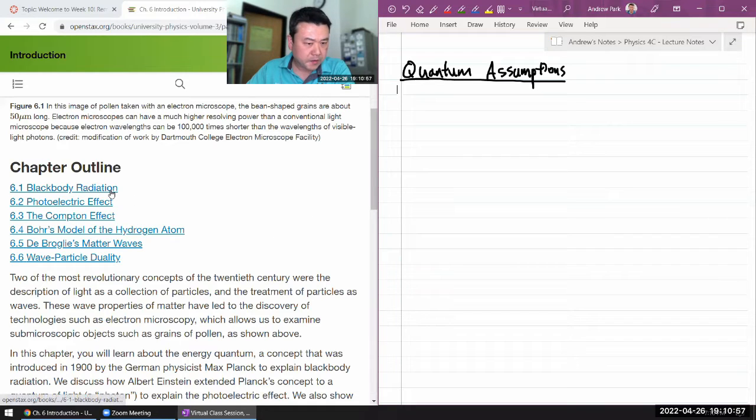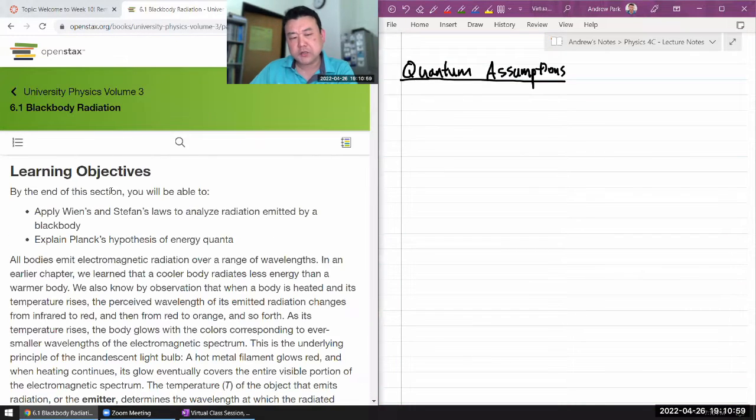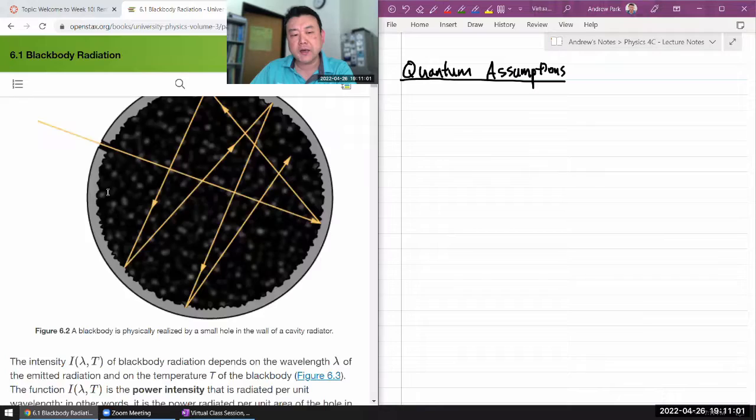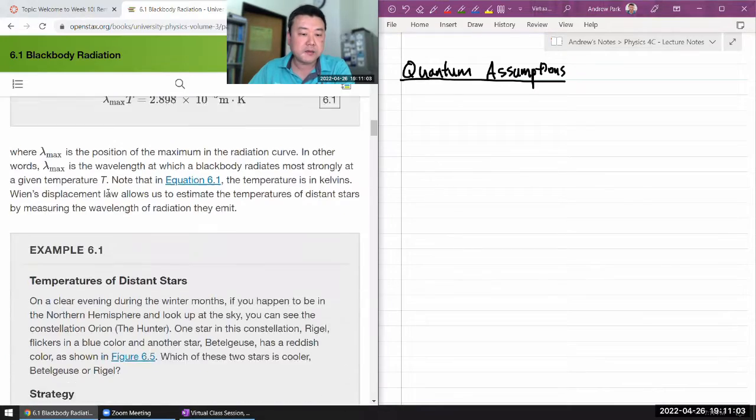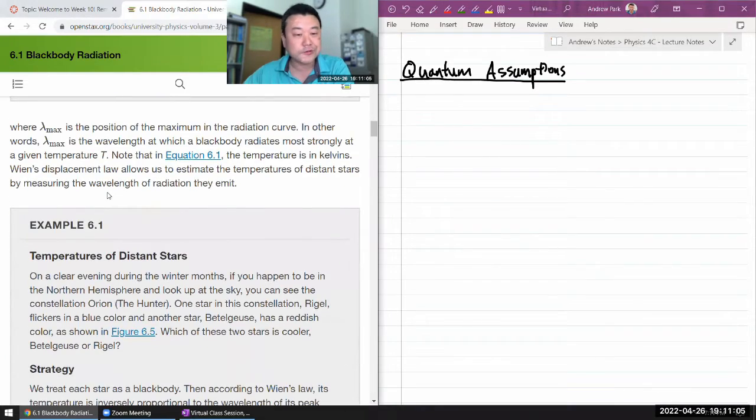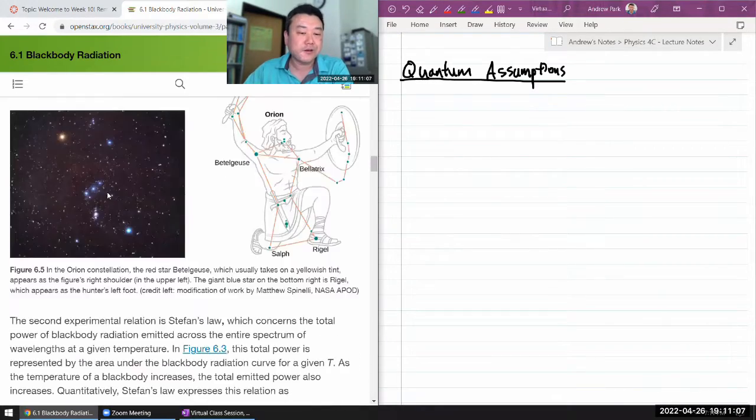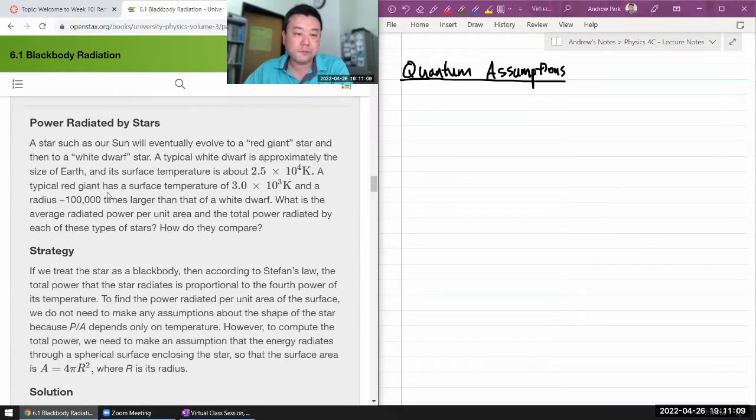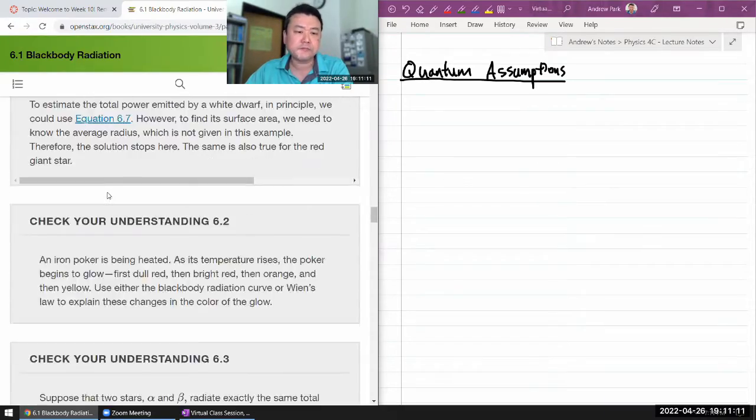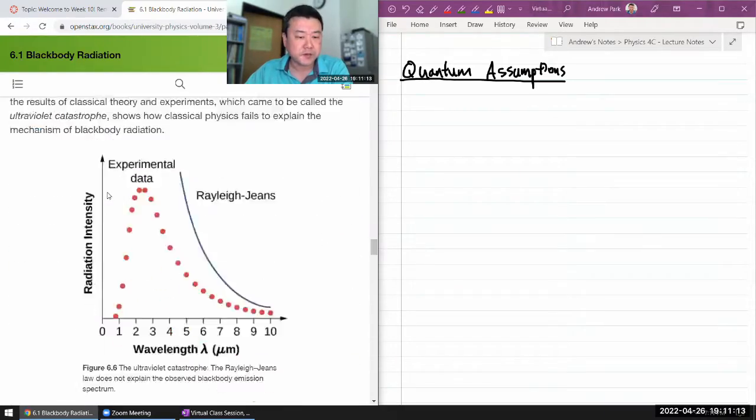The first of those assumptions are introduced by Max Planck. It was introduced as he was trying to develop what we call Planck's law that explains the black body radiation spectrum.